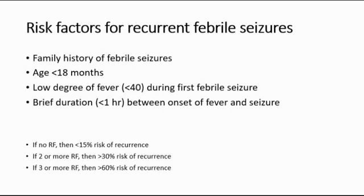Based on these 4 risk factors, we can determine the risk of recurrence. If there are none of these risk factors, the risk of recurrence is less than 15%. If there are 2 or more risk factors, the risk of recurrence is more than 30%. If there are 3 or more risk factors out of these 4, then the risk of recurrence is more than 60%, which is a very high risk.